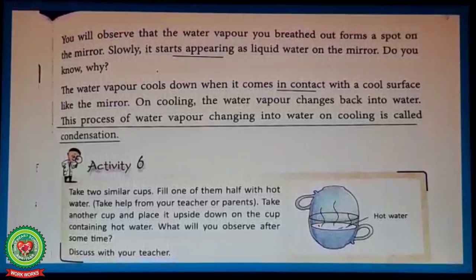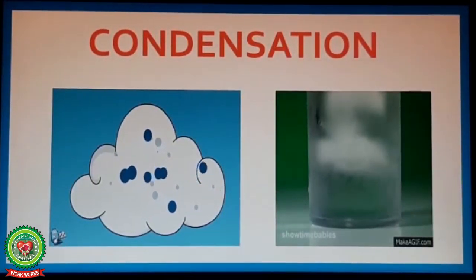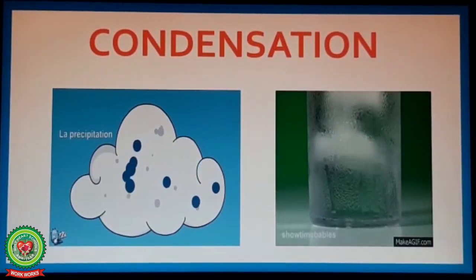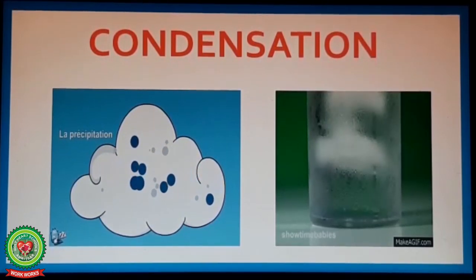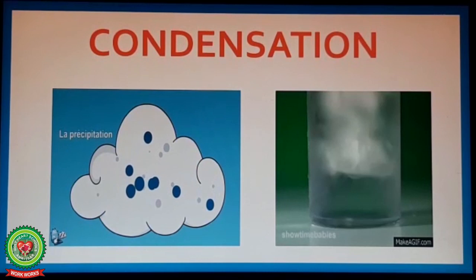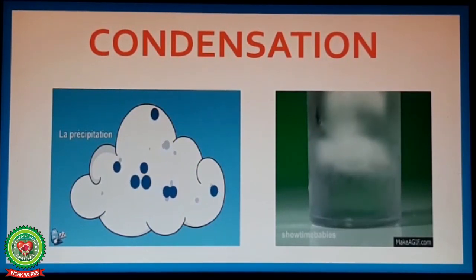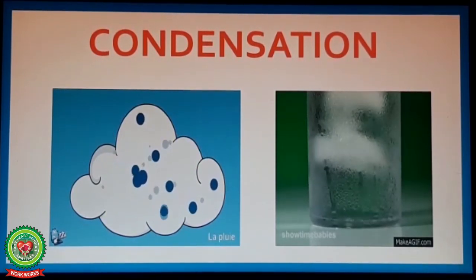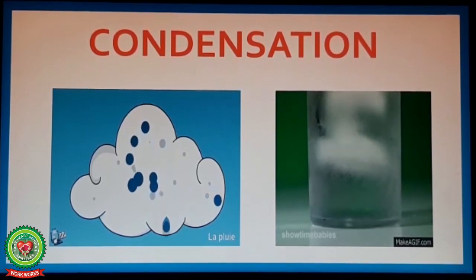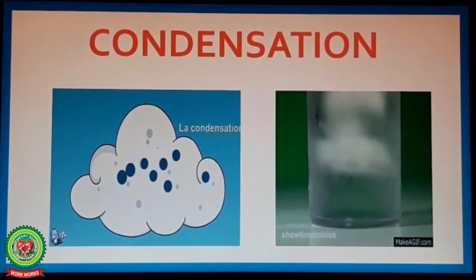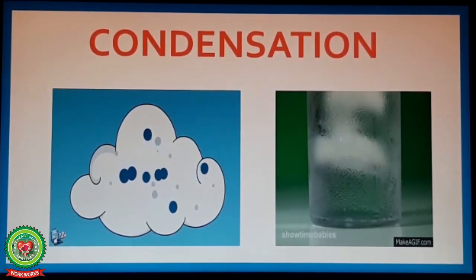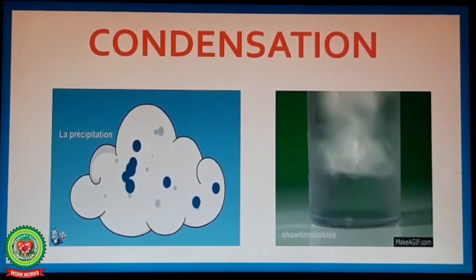Students, have you seen water droplets on the outside surface of a glass in the summer season, or some droplets on the mirror of your bathroom after a hot shower? These are the water vapors present in the air which come in contact with a cool surface and turn back into water droplets. This process is called condensation.